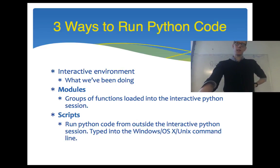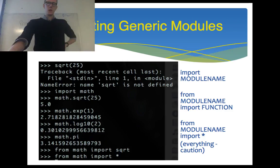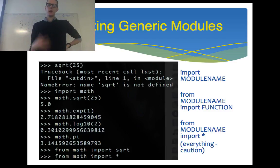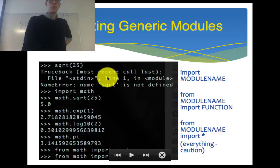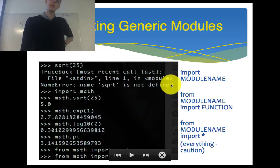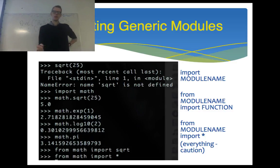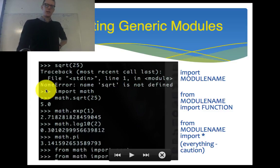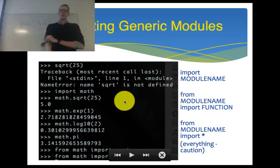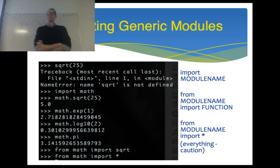So far we've been only working in the interactive environment, and having to retype everything is not great. When working with modules, first I want to show you how to import a module. If I try and run the square root command, nothing happens — it errors. We don't know what a square root command is. However, I can do `import math`, and then I can run `math.sqrt`, and I can get the square root of a number. What `import math` does is it imports the math module.